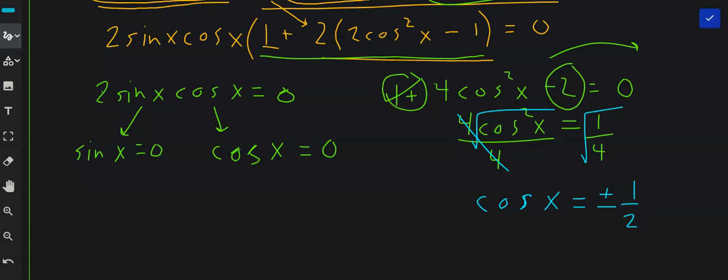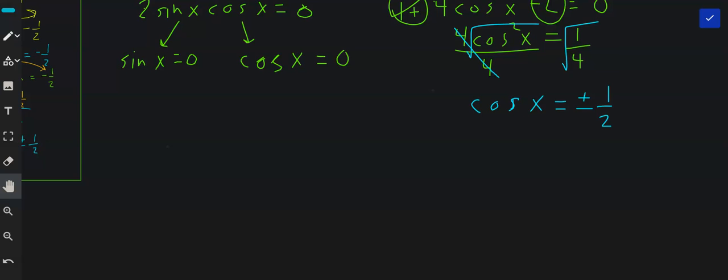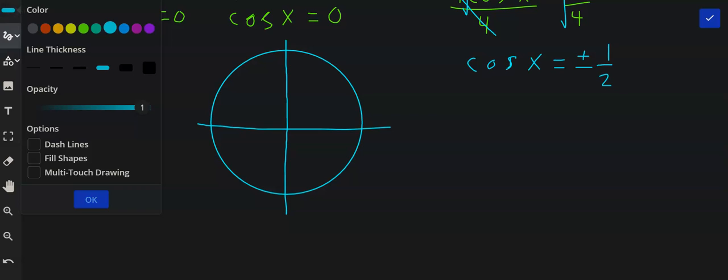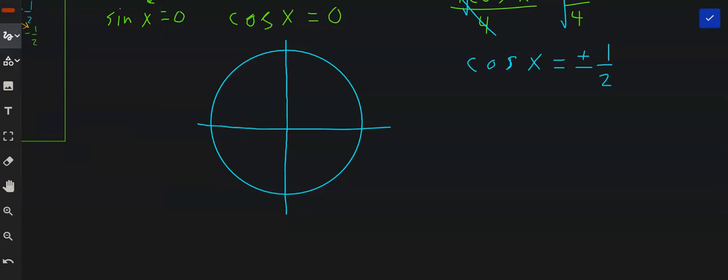So now if we take a look at the circle, sine x being 0, sine is the y value. So if that occurred, that would occur here and here. So out of that, we get 0 and pi. Cannot call anything 2 pi because they will restrict me. My answers have to be between 0 and 2 pi.